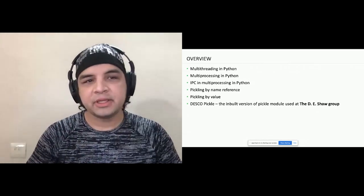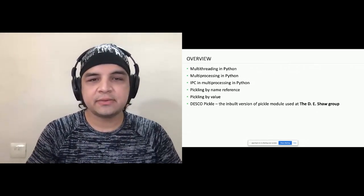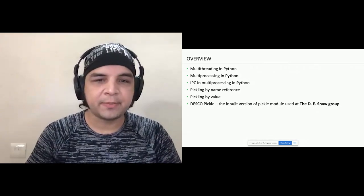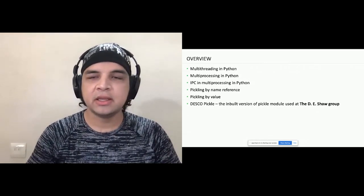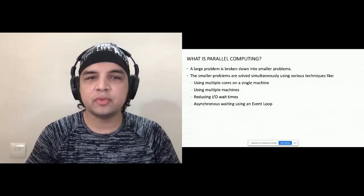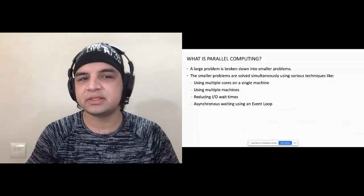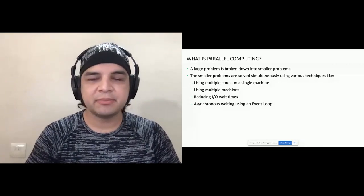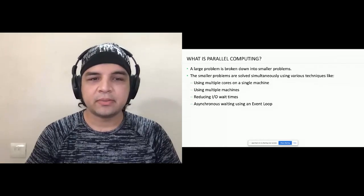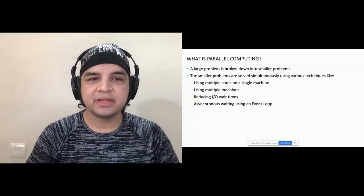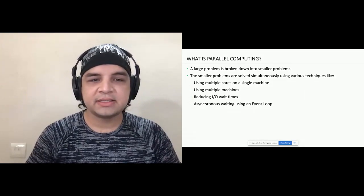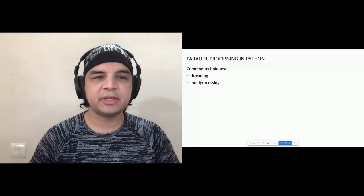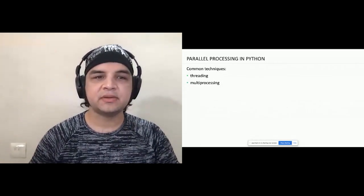What is parallel computing? Basically you have a big problem, you break it down into smaller problems, and try to reduce wall time by increasing CPU time or reducing IO-bound wait time. We can leverage various techniques like using multiple cores on a single machine, using multiple machines in a grid, reducing IO waiting times, or using asynchronous programming with an event loop. We will focus mainly on two techniques: threading and multiprocessing.